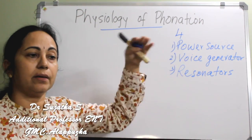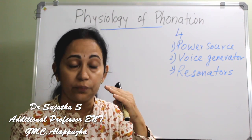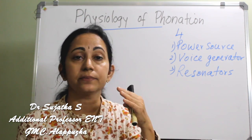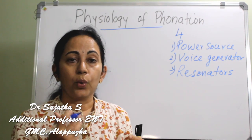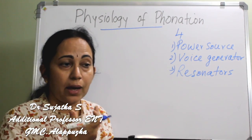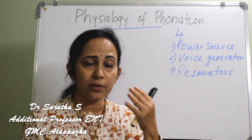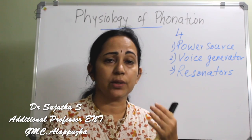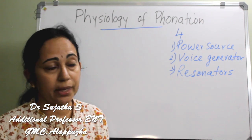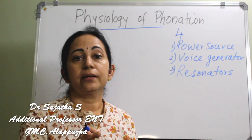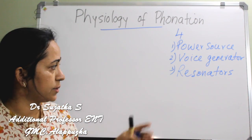The fundamental glottic vibrations go through other parts of the vocal tract — like the pharynx, the nasopharynx, the oropharynx, the nasal cavity, and the oral cavity. These areas have certain qualities; they resonate and produce specific qualities in the voice.